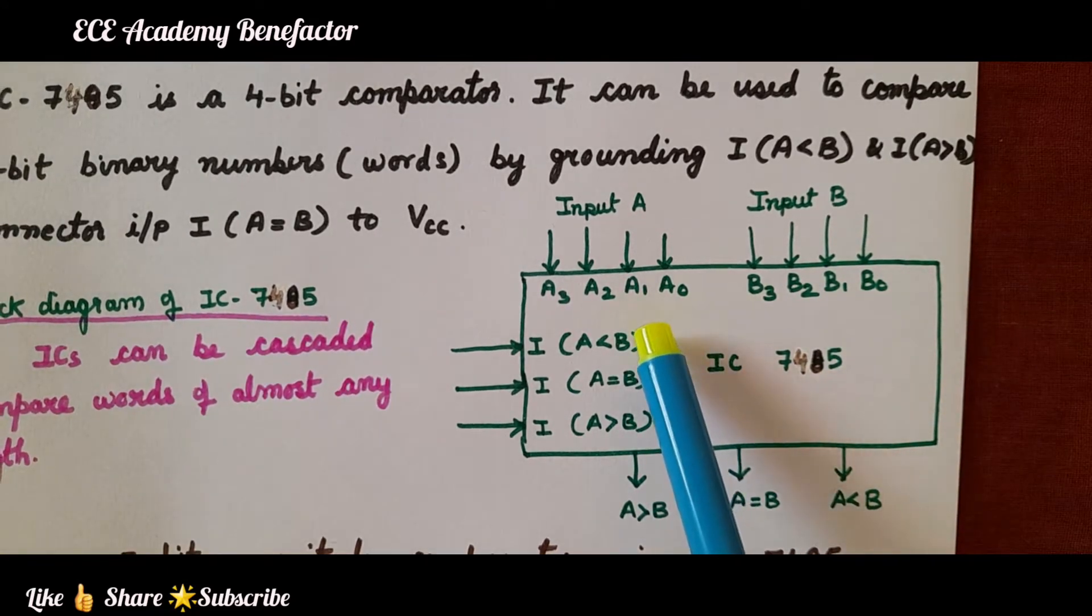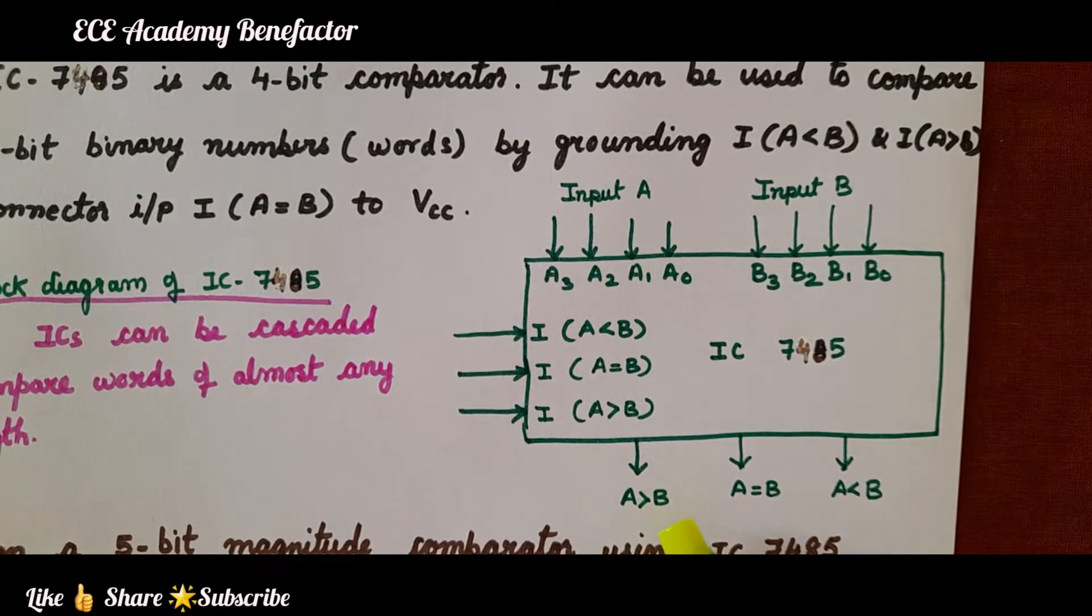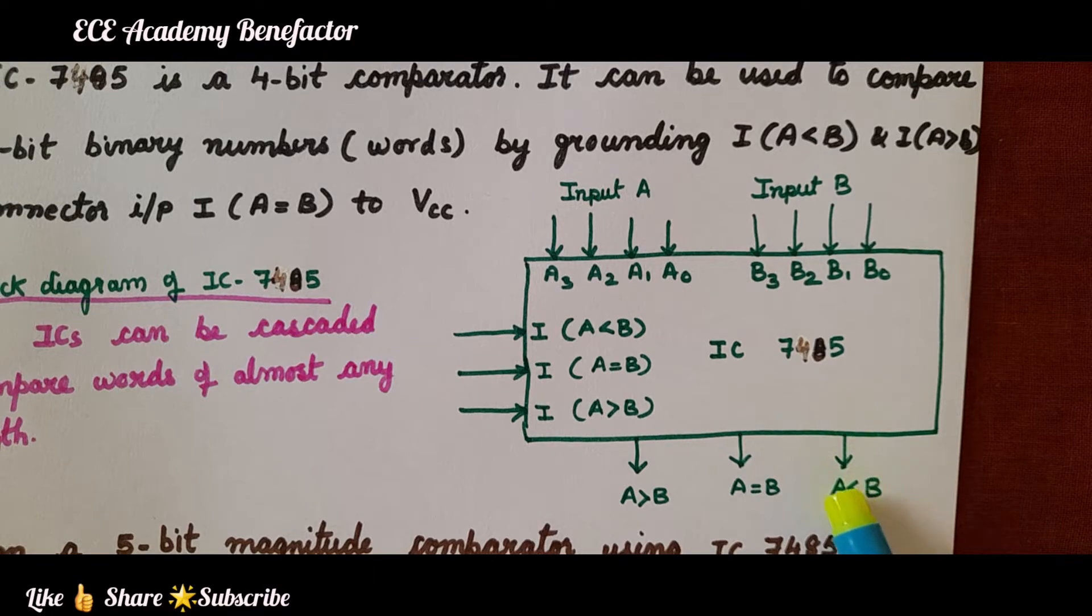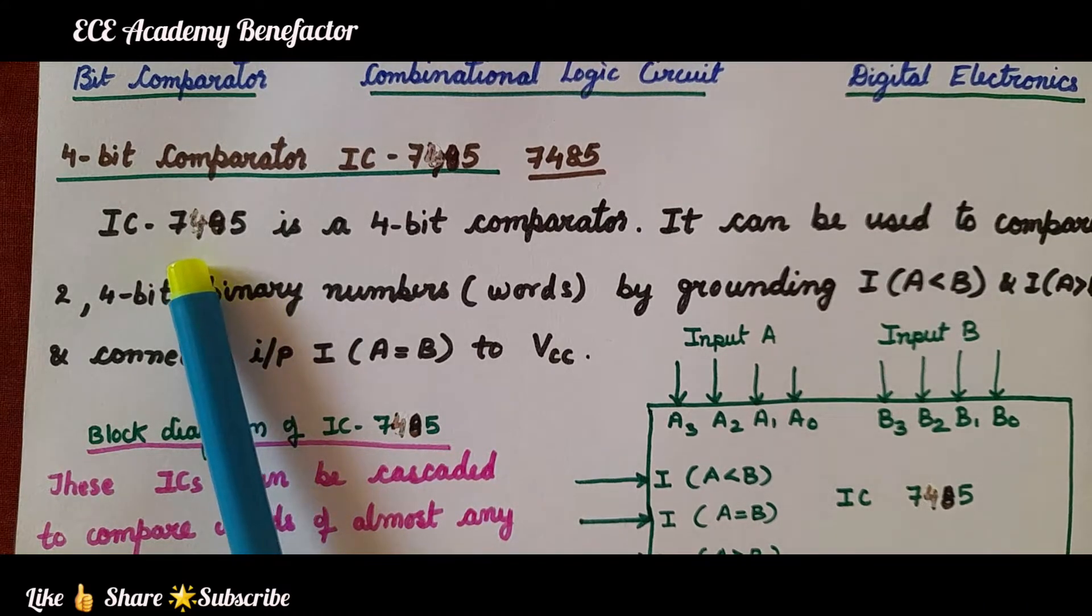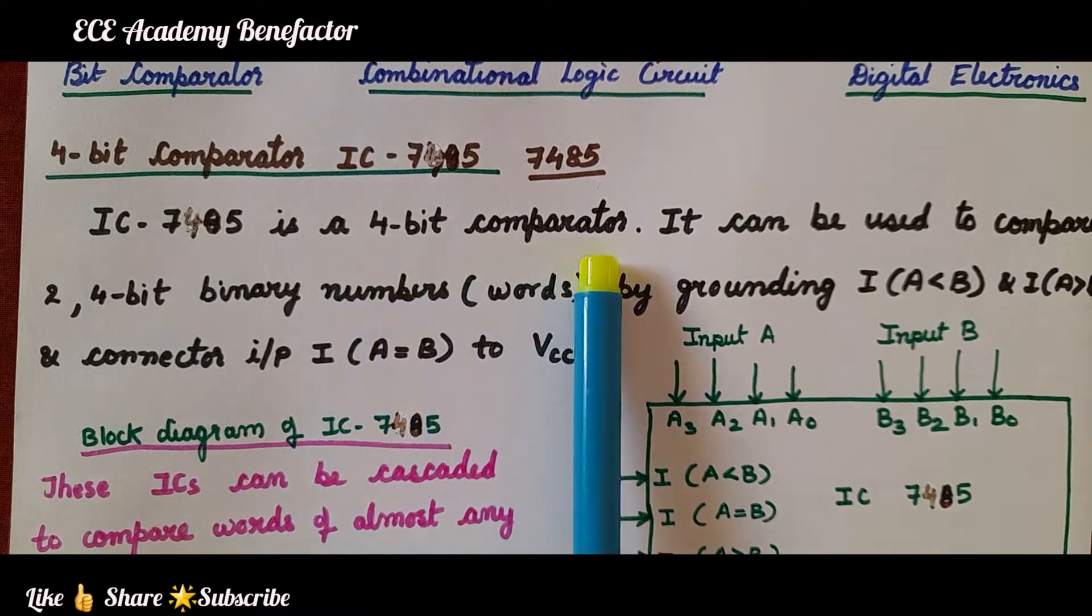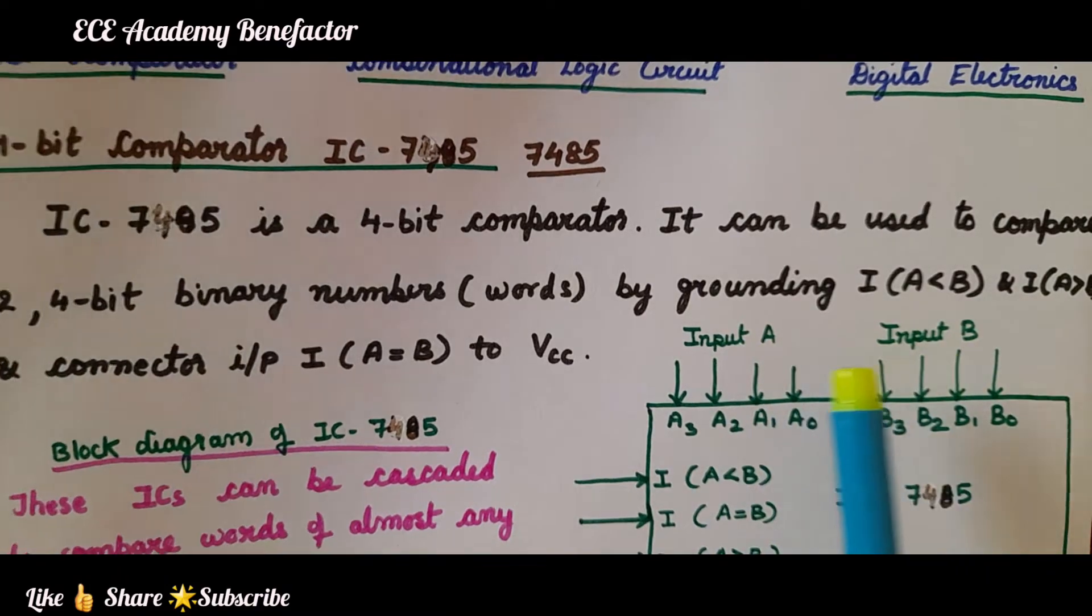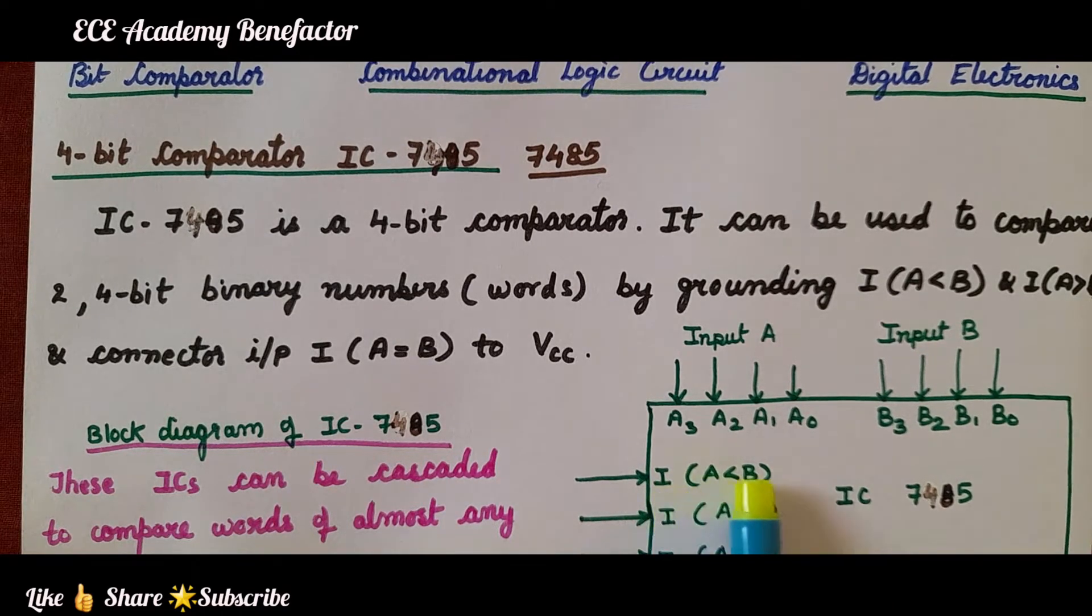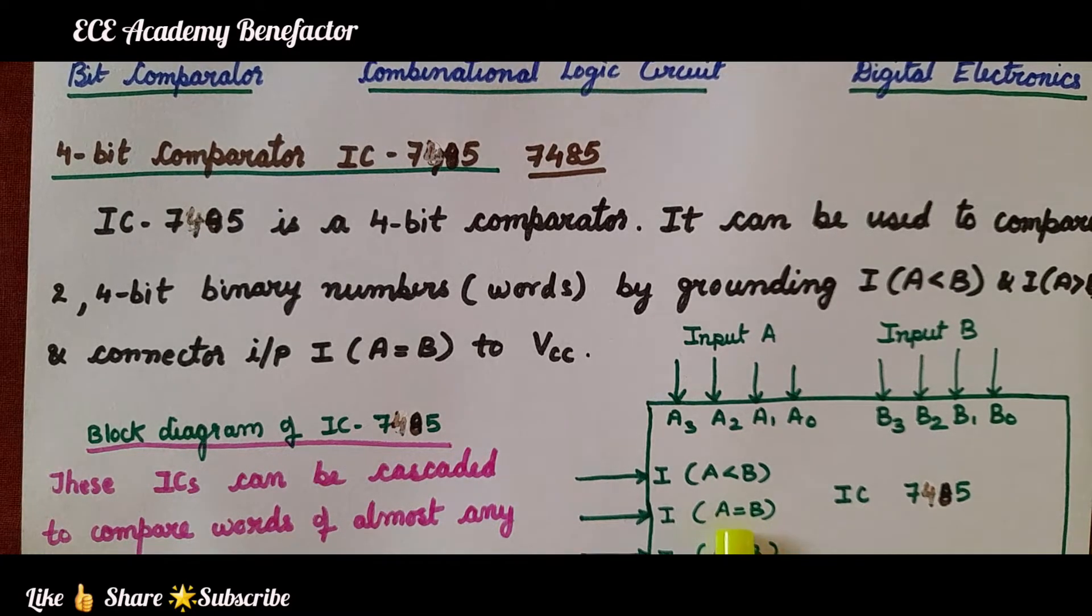And it is checking the condition whether A is less than B, A is equal to B, and A is greater than B. And it is generating the three outputs: whether A is greater than B, A is equal to B, or A is less than B. Coming to the basic things of IC7485, it is a 4-bit comparator. It can be used to compare two 4-bit numbers by grounding I, A less than B, A greater than B, and connecting I, A is equal to B to VCC.